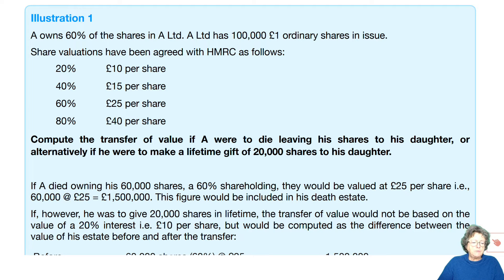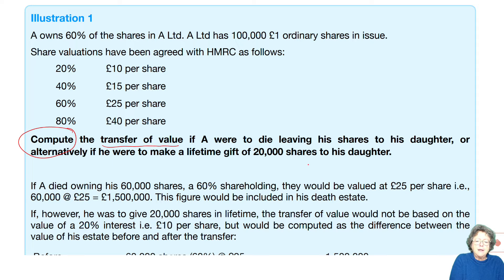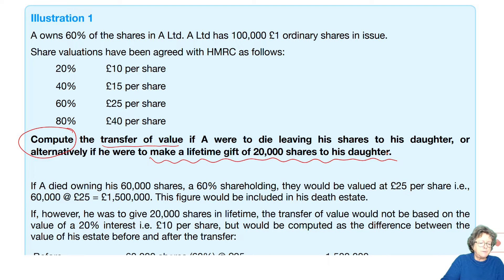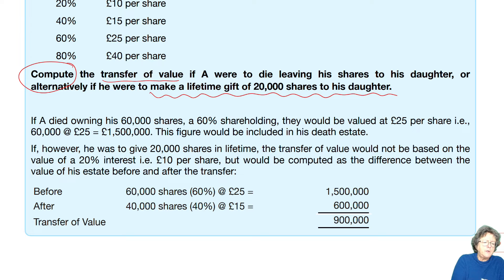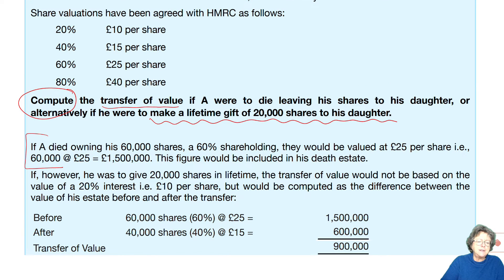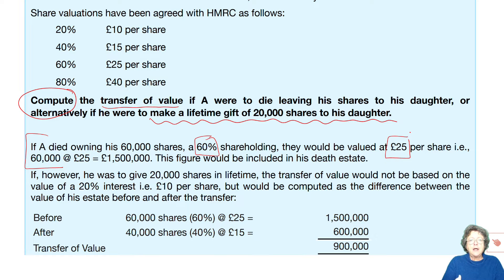We are to compute the transfer of value if A were to die leaving the shares to his daughter, or if he makes a lifetime gift of £20,000 of the shares to his daughter — two alternatives. If he dies, A dies leaving 60,000 shares in an estate — it is a 60% holding. Therefore each share would be valued at £25, giving £1.5 million in the death estate. When we come to that section, you may have to do that calculation, either as a little working if there's space on the pro forma or as a separate working.